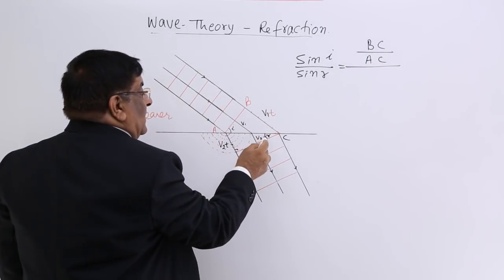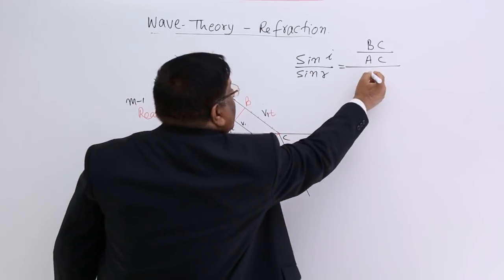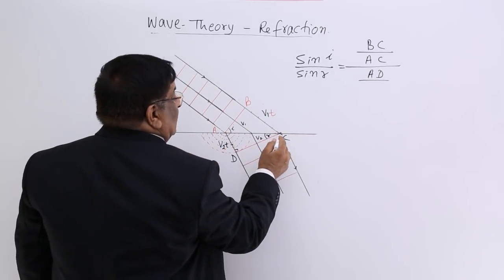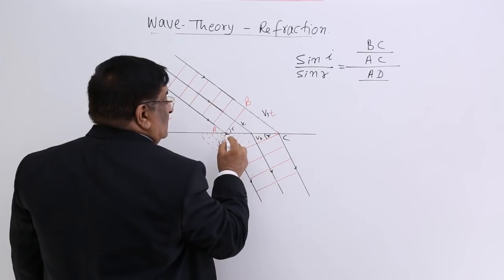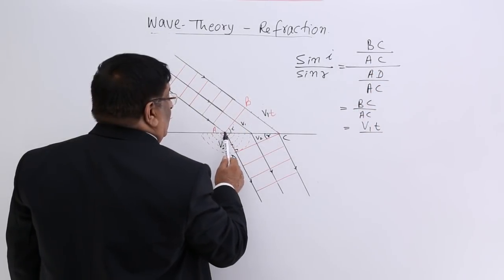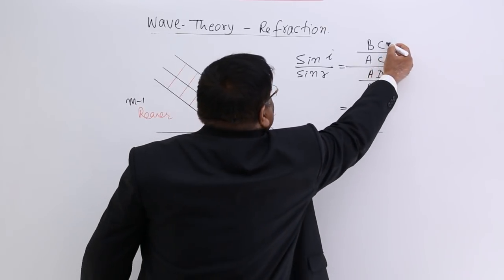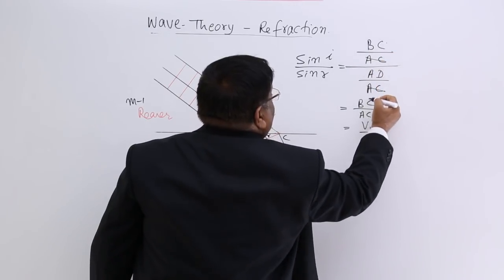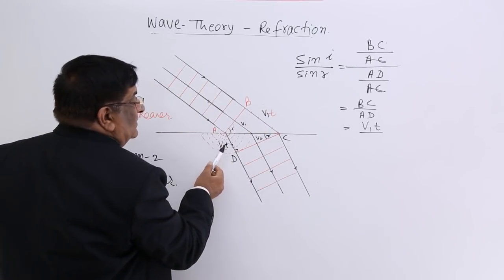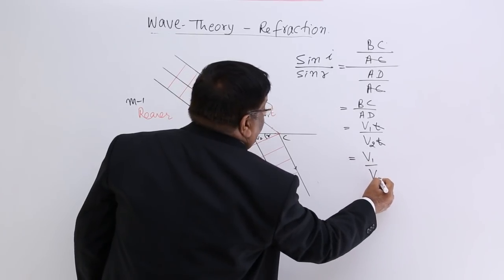After refraction, this is the first wavefront. Now, sin i / sin r — sin i equals perpendicular BC upon hypotenuse AC. This is divided by sin r, which equals perpendicular AD upon hypotenuse AC. Since AC cancels out, we are left with BC upon AD. And AD equals V2 × T, while BC equals V1 × T. After T cancels, we get sin i / sin r = V1 / V2.